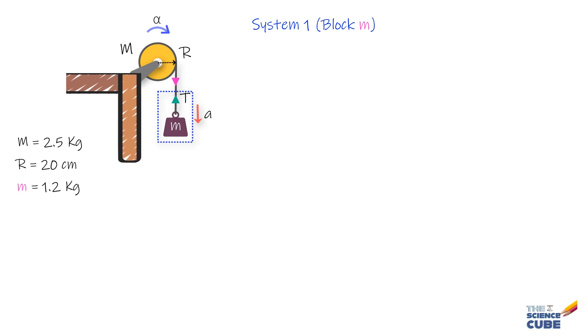we connect its acceleration to the forces acting on it using Newton's second law. Then we take the disc as system 2 and connect its angular acceleration alpha to the torque acting on it using Newton's second law for rotation.